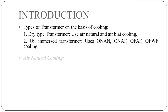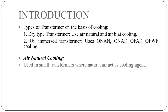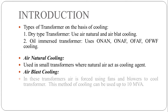The first cooling scheme used in dry type transformer is air natural cooling. Air natural cooling is used in small transformers where natural air acts as a cooling agent. The second method of cooling used in dry type transformer is air blast cooling, where air is forced using fans and blowers to cool the transformer.